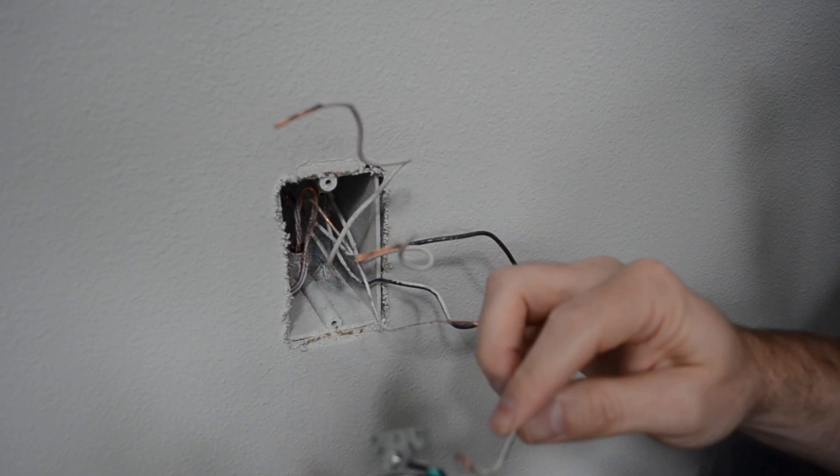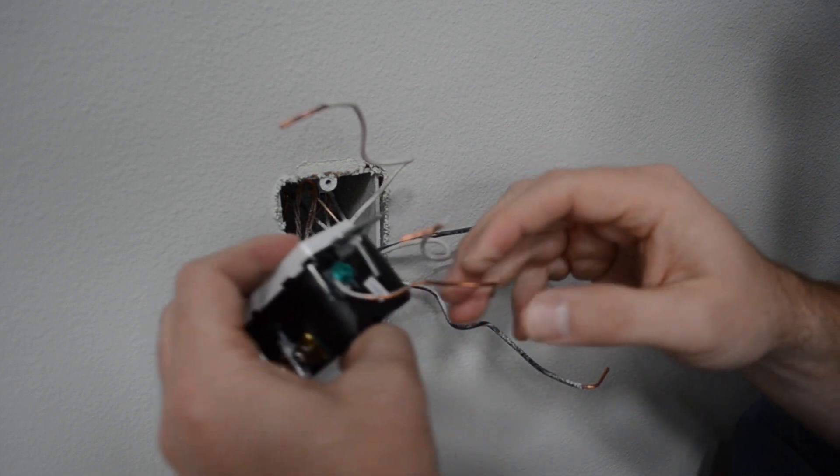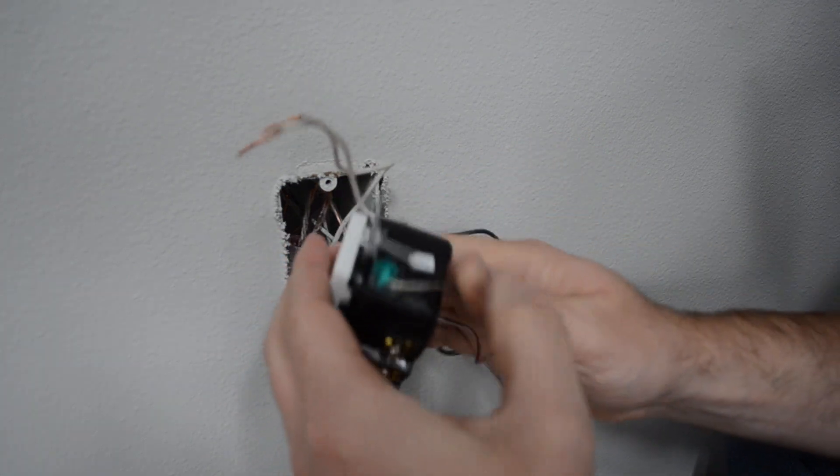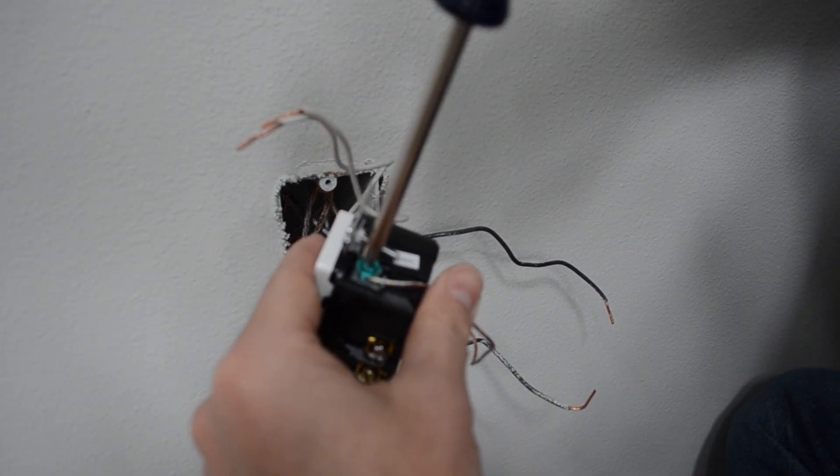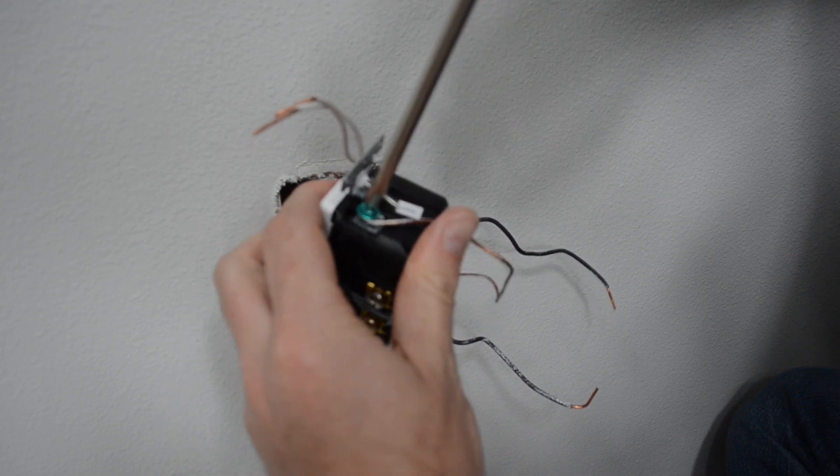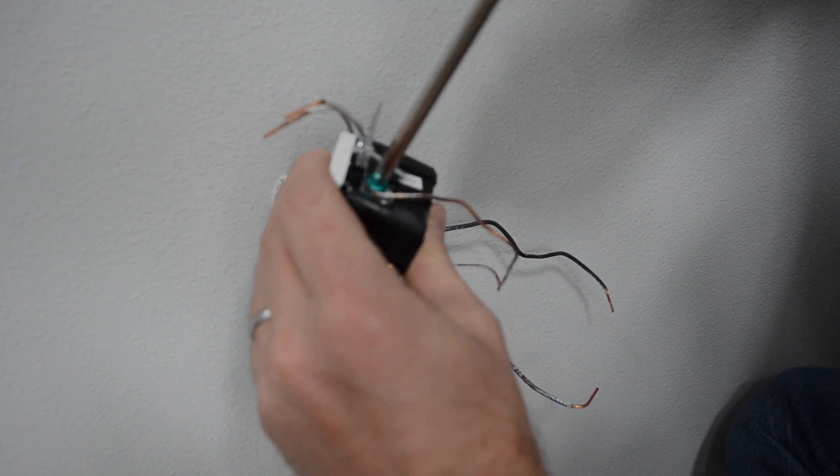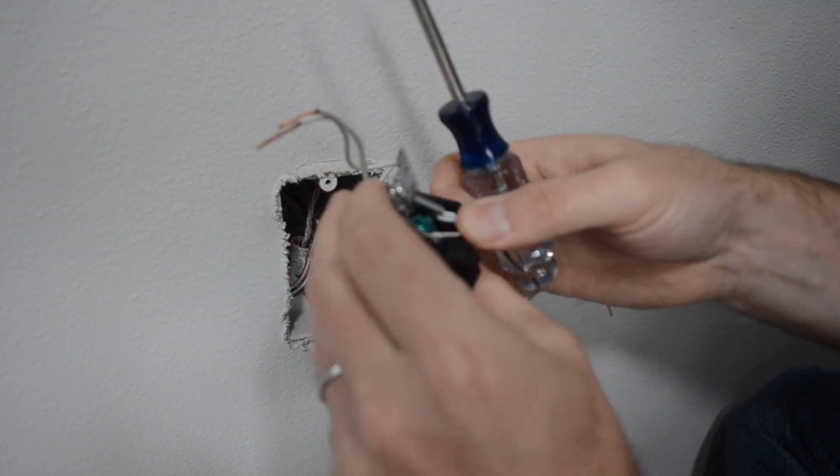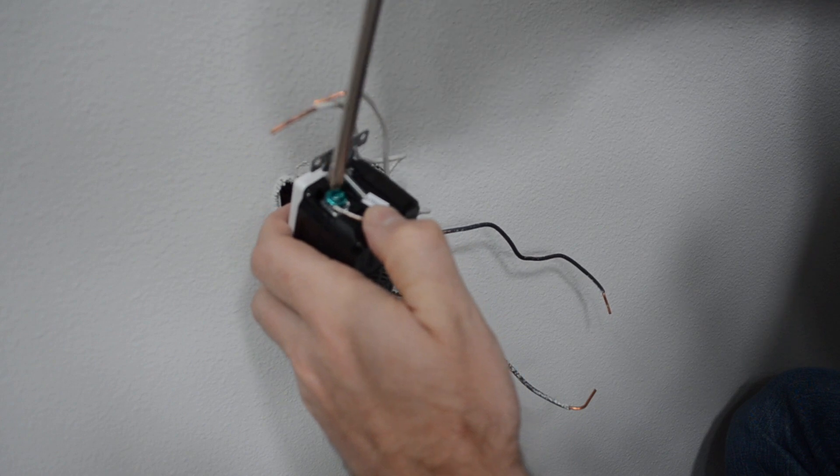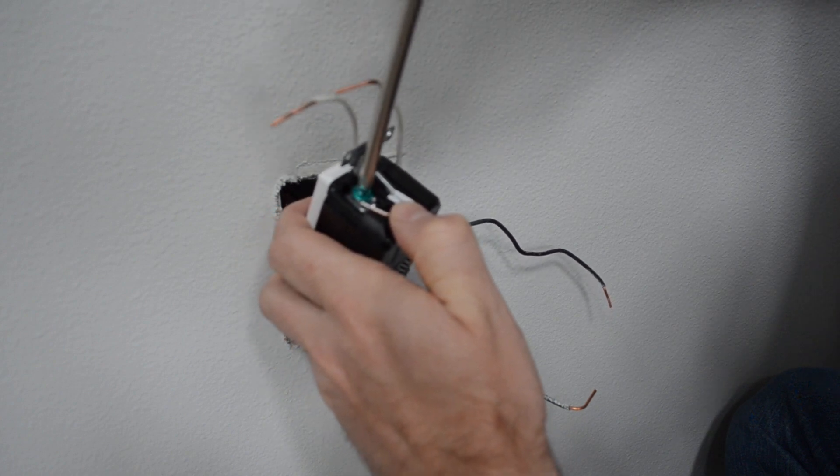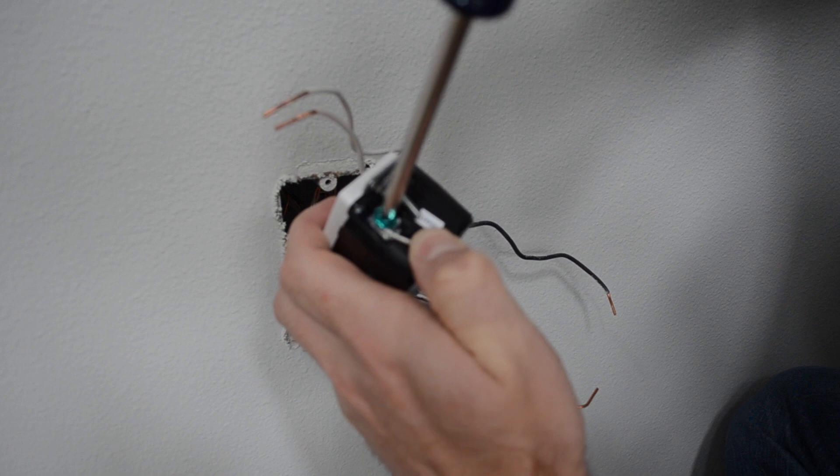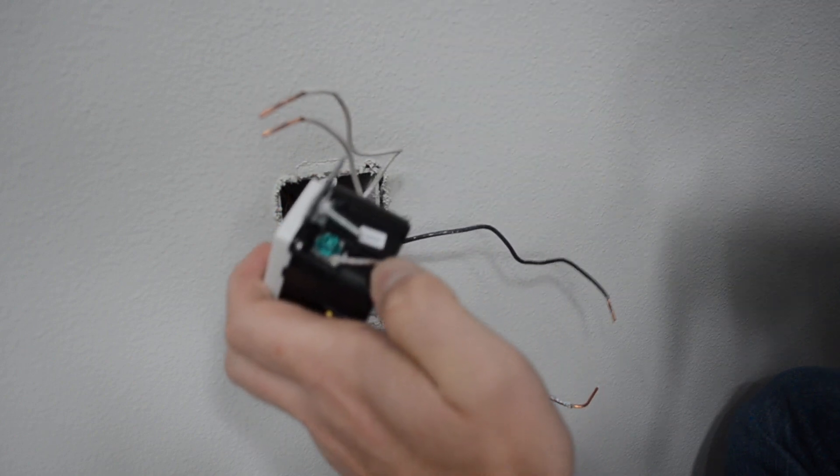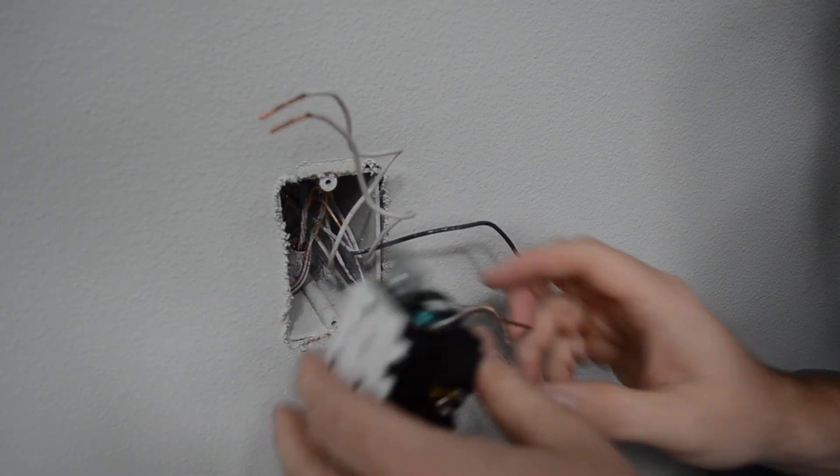I'm going to start with the ground. And you take the ground wire and you wrap it around the green post. And then you screw that down. Now that that's nice and snug, we will work on the other two.